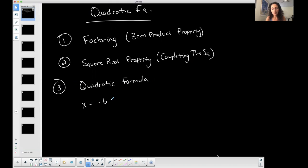x equals the opposite of b plus or minus the square root of b squared minus 4ac all over 2a. When I get to that one, we'll start with square root property and completing the square, because we've done factoring, so we'll go here, and then in the next video I'll do quadratic formula.